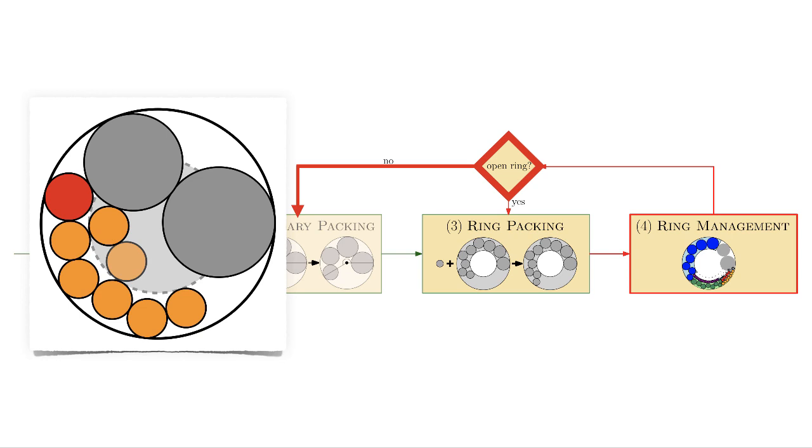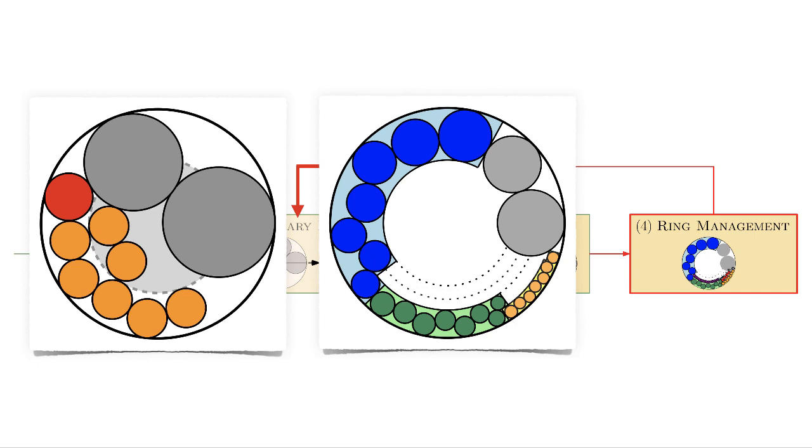If there is no open ring left, we go back to boundary packing on the indicated light grey area. This leads to a packing pattern in concentric rings, as shown here.